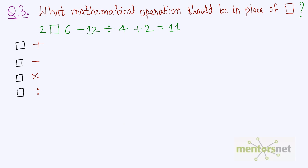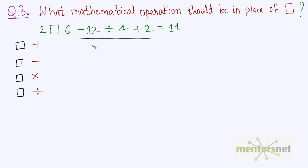Let us move on to question number three. What mathematical operation should be in place of this box in this expression? You have to find out what kind of operation will come in this place — will it be multiplication, division, subtraction, or addition? We cannot perform other operations until we know this operation, because priority always comes into the scene.